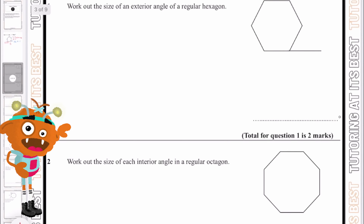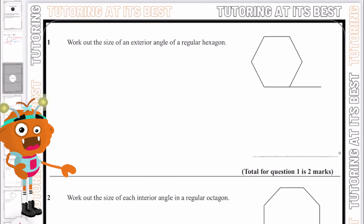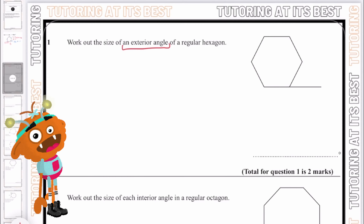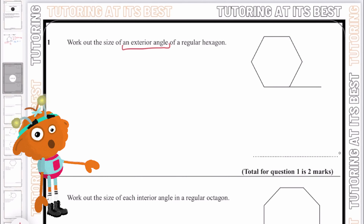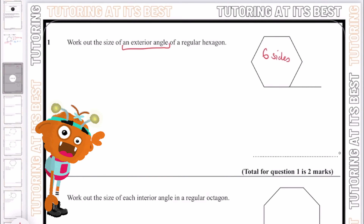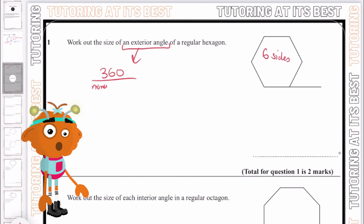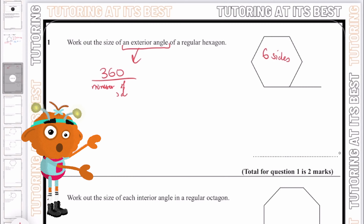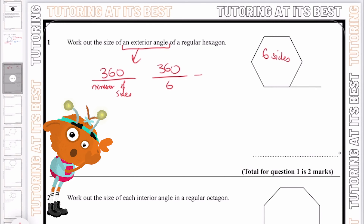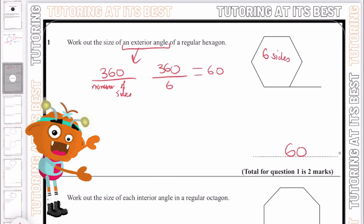Question one: work out the size of an interior angle of a regular hexagon. A hexagon has six sides. To work out the exterior angle we do 360 degrees divided by the number of sides: 360 divided by 6 gives us 60. So one exterior angle is 60 degrees.